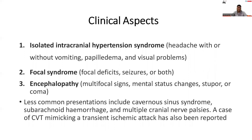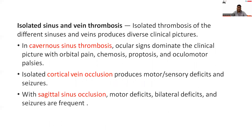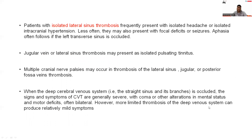Less common presentations include cavernous sinus syndrome, subarachnoid hemorrhage, and multiple cranial nerve palsies. A case of CSVT mimicking a transient ischemic attack has also been reported. Isolated thrombosis of different sinuses produces diverse clinical pictures. Cavernous sinus thrombosis presents with orbital pain, chemosis, proptosis, and oculomotor palsies. Isolated cortical vein occlusion produces motor or sensory deficits and seizures. Sagittal sinus occlusion produces motor deficits, bilateral deficits, and seizures. Patients with isolated lateral sinus thrombosis frequently present with isolated headache and intracranial hypertension.